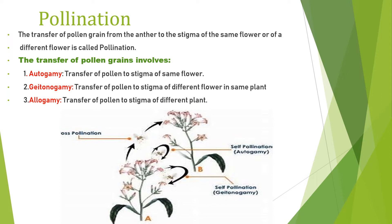In geitonogamy, the transfer of pollen occurs to the stigma of a different flower on the same plant. In allogamy, the pollen is transferred to the stigma of a flower on a different plant of the same species.